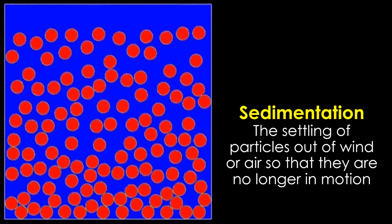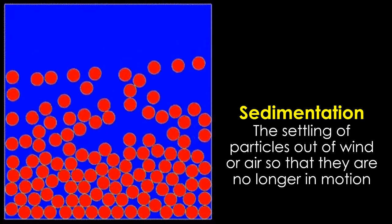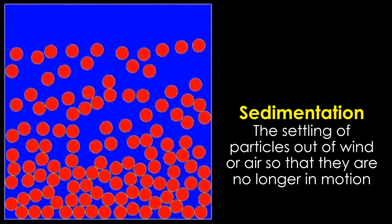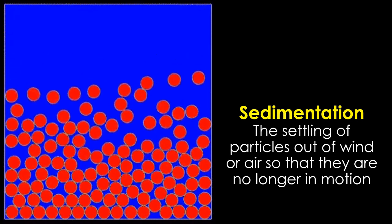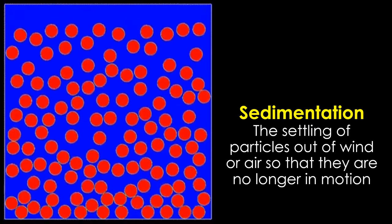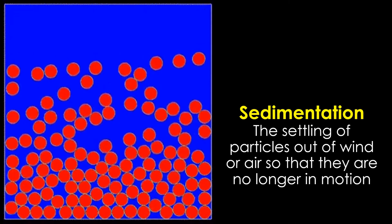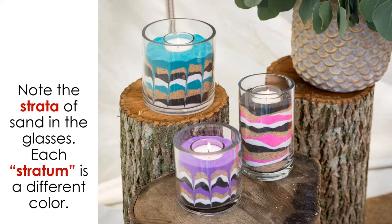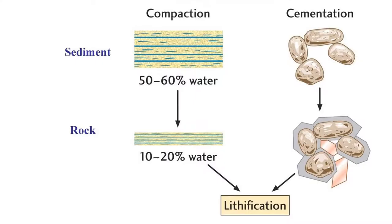The deposition of sediment is more correctly called sedimentation. It is the settling of particles out of a fluid, like air or water, so that they are no longer in motion. The sediment spreads out into layers called strata. These strata ultimately undergo lithification, becoming compacted and cemented into sedimentary rock.